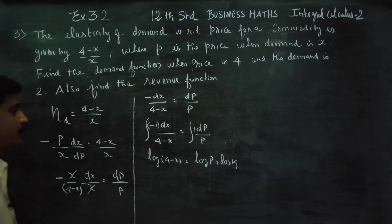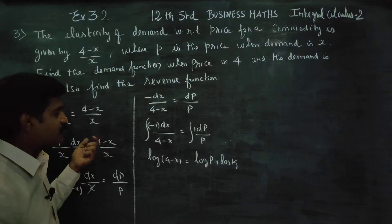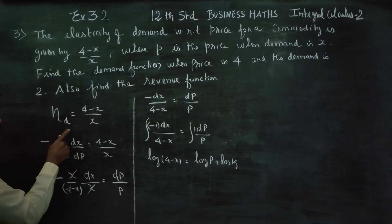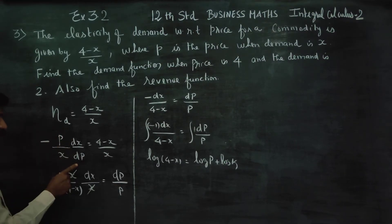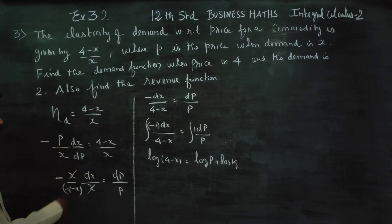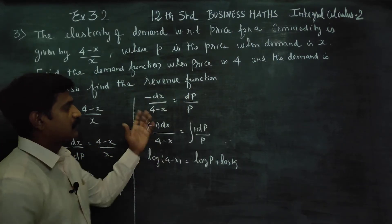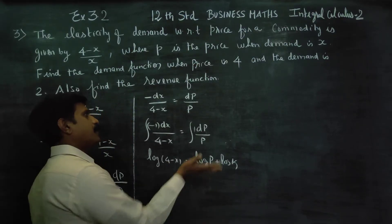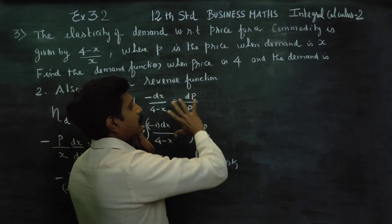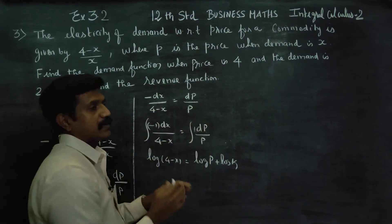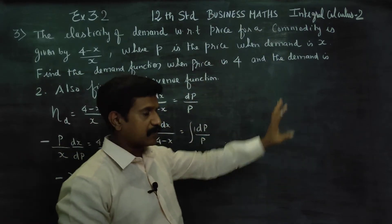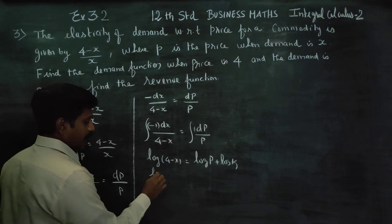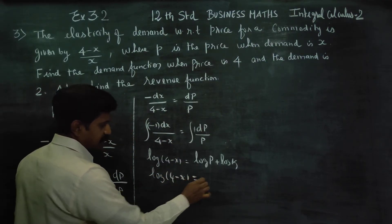The elasticity of demand is minus p by x times dx by dp. This is called the variable separable method. Using the variable separable method, we get the logarithm of (4 minus x) is equal to...